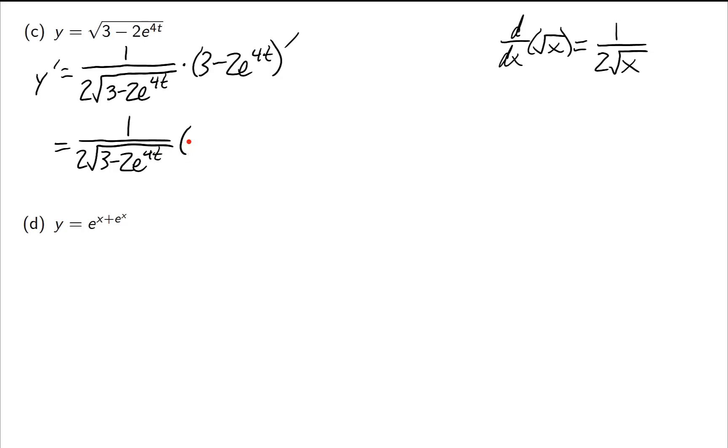The 3 is going to disappear, and then I've got a negative 2 for the coefficient, and e to the 4t is the e to the kt rule, whose derivative is always k e to the kt. I get 4e to the 4t. Now let's simplify this just a little bit. I notice the 2's can cancel, and that leaves me with negative 4e to the 4t over the square root of 3 minus 2e to the 4t.